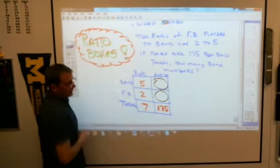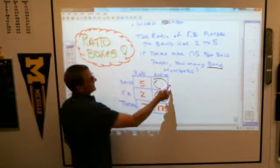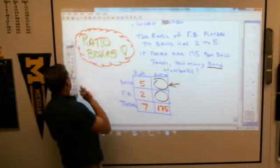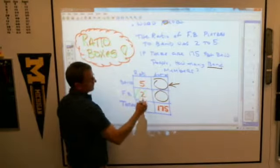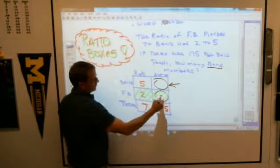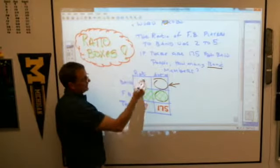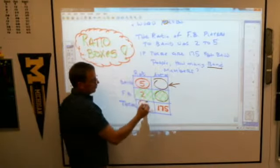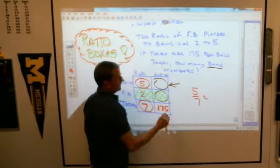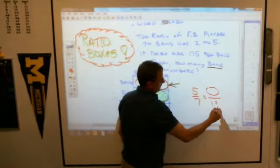Which one do I want to know? I want to know how many band people. So that's this one. I don't need this part right here. I can kind of ignore it because I wasn't asked how many actual football players. I can figure that out in the end. So this is the fraction I need. I have my five over my seven. And that equals what I don't know over 175.